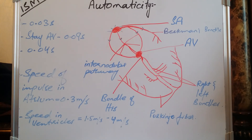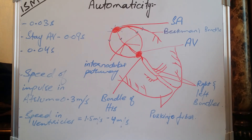In summary, the automaticity of the heart means the ability of the heart to produce impulses on its own without external assistance. It does have two or three other pathways — the sympathetic and parasympathetic pathways — which in different physiological conditions increase or decrease the ability of the SA node and AV node. We will discuss these in our next lecture. This is all about the automaticity of the heart.